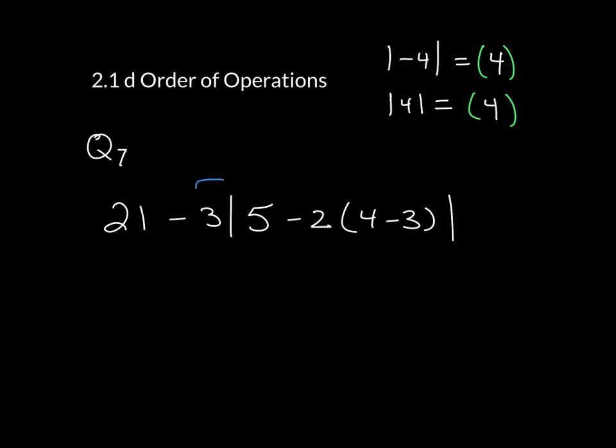So the same rule applies here. You have to do everything on the inside of that absolute value first. Now notice, I put this 3 inside this grouping symbol because this 3 is being understood to be multiplied times the absolute value when you're finished. So make sure you do not combine the 21 and 3. You can't do that. That would be the wrong order.